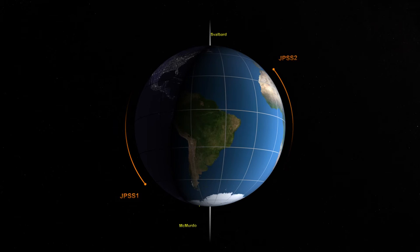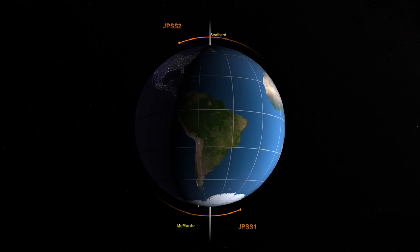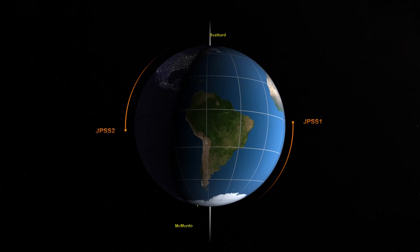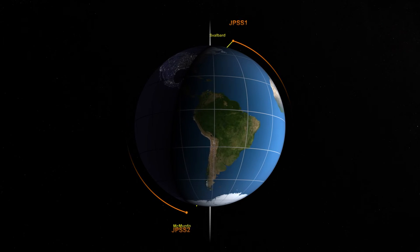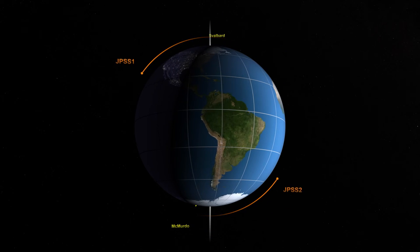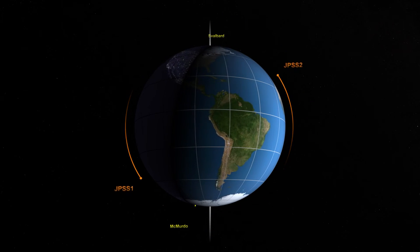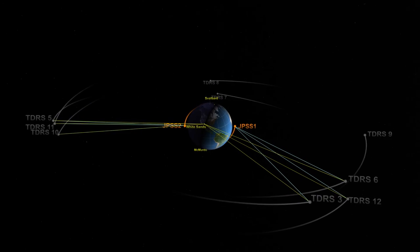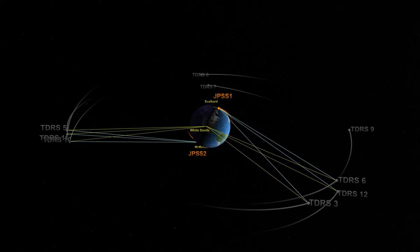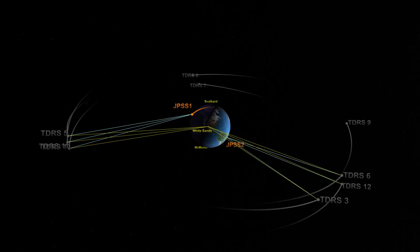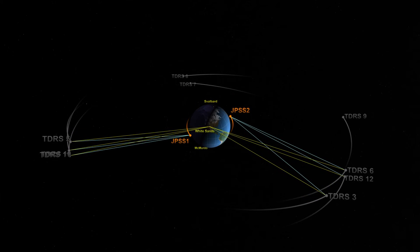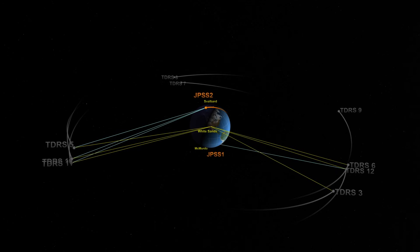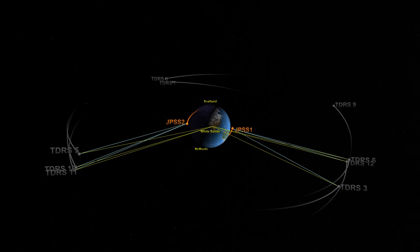For the next phase of the JPSS constellation, SNPP is replaced by the JPSS-2 satellite and leads JPSS-1 by half an orbit. At this point, JPSS begins using NASA's Tracking Data Relay Satellites, or TDRS, in addition to Svalbard, to downlink data. The TDRS satellites are in a geosynchronous orbit, which means they orbit at a rate that matches Earth's rotation.